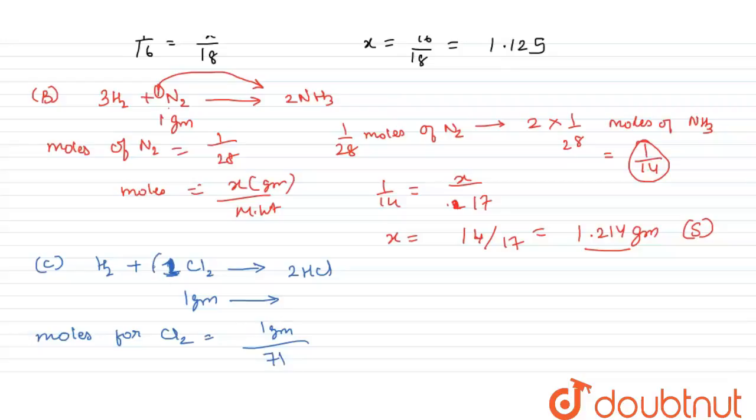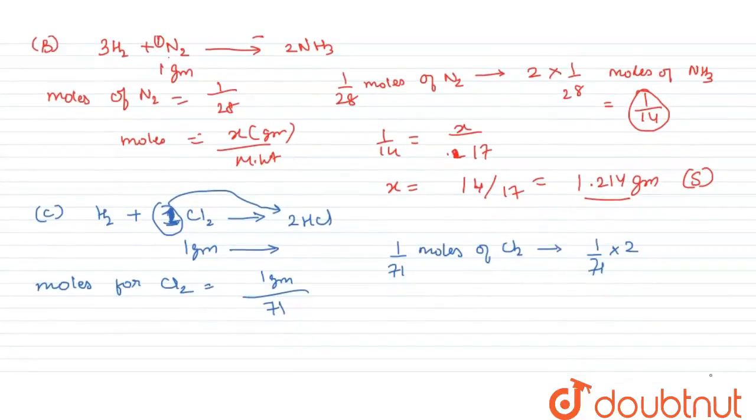If 1 mole of Cl2 gives 2 moles of HCl, then 1 upon 71 moles of Cl2 will give 1 by 71 into 2. Now we will find the mass of HCl. Moles of HCl are 2 by 71 equals X grams upon molecular weight of HCl, which is 36.6.